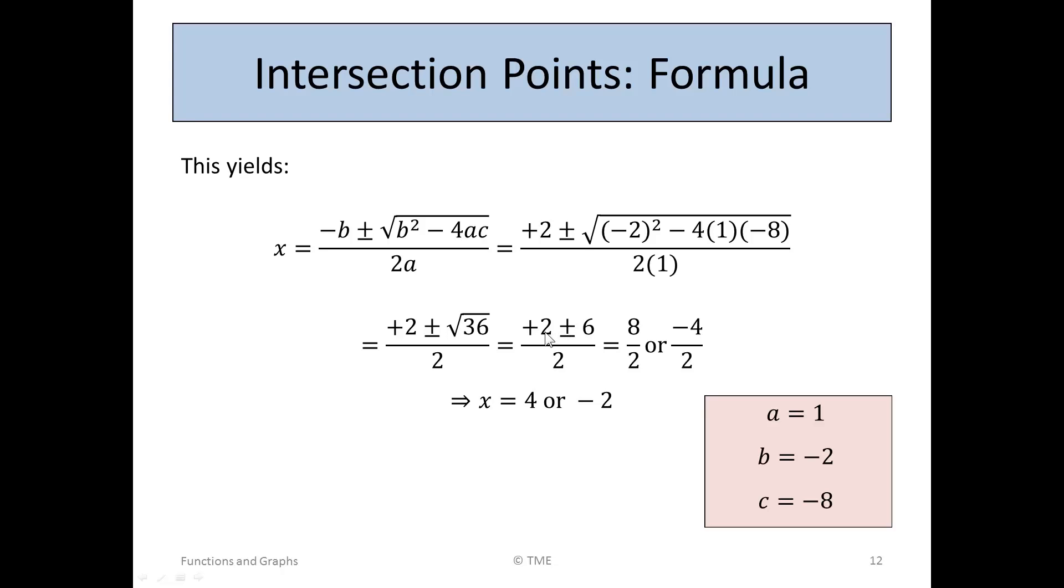Taking the first answer, 2 plus 6, we get 8 over 2. And the second answer, 2 minus 6, we get minus 4 over 2. 8 over 2 is 4. Minus 4 over 2 is minus 2. So we have found now the roots, the values for x at which the curve crosses the x-axis.